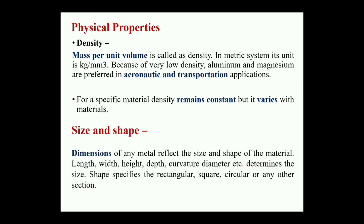The second physical property is size and shape of materials. According to manufacturing standards, materials have different sizes and shapes. Dimensions of any metal reflect the size and shape of the material, considering length, width, height, depth, curvature, diameter, etc. Shape is specified as rectangular, square, circle, or any other section, and must be within the tolerance limit.